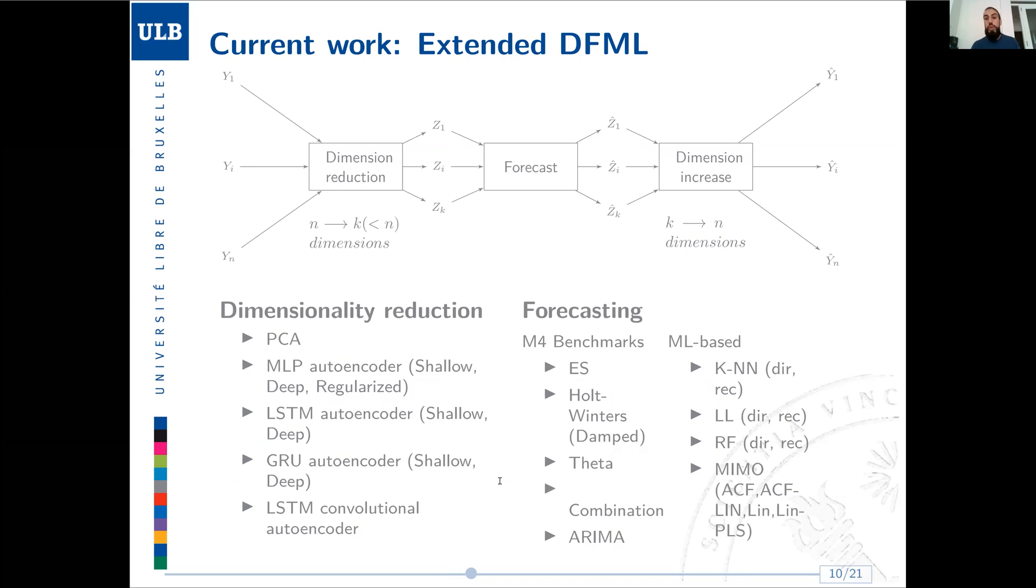What I'm presenting here today is an extension of this framework, in which instead of using only PCA, we try to put some dimensionality reduction neural techniques like feed-forward multi-layer perceptron autoencoder in the shallow, deep or regularized form, LSTM autoencoder, GRU autoencoder, and a combination of LSTM and convolutional autoencoder. And instead of constraining ourselves to only having machine learning based methods, we actually introduced some statistical forecasting techniques like exponential smoothing, Holt-Winters, the theta method. Basically, the majority of those methods that have been used at benchmarking the M4 competition. And as for machine learning based, we are using k-nearest neighbor, random forest, and some multiple input, multiple output techniques.